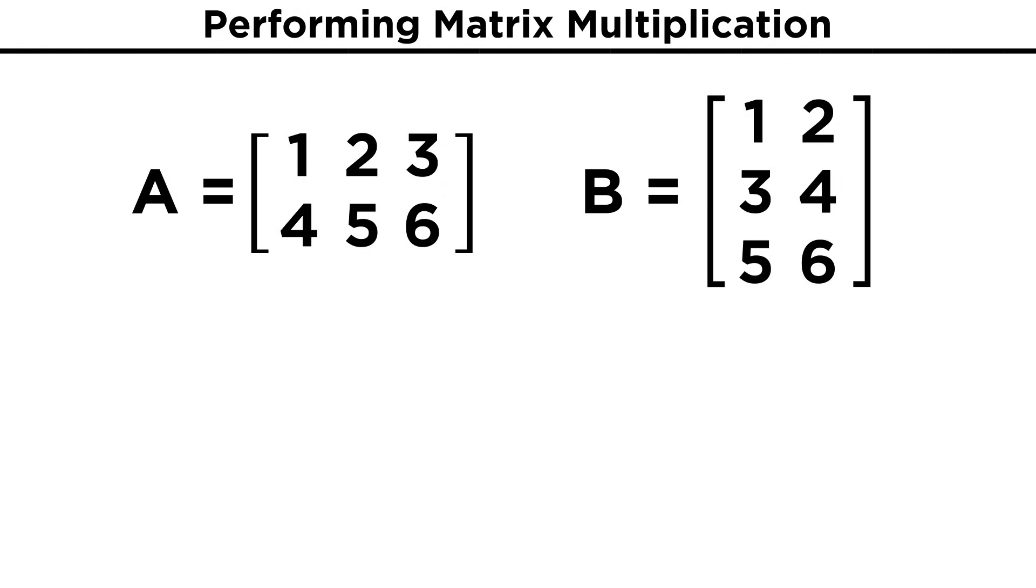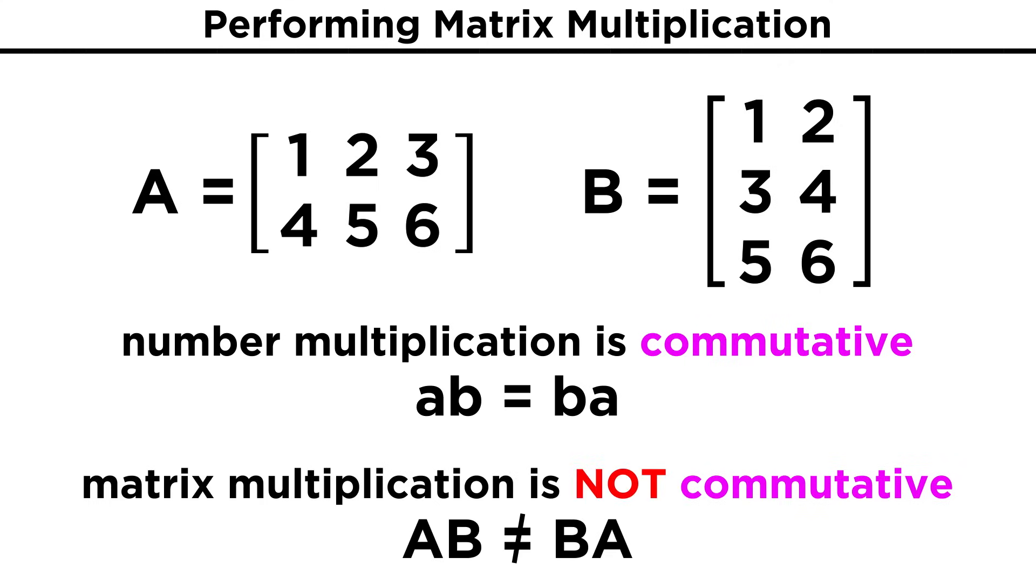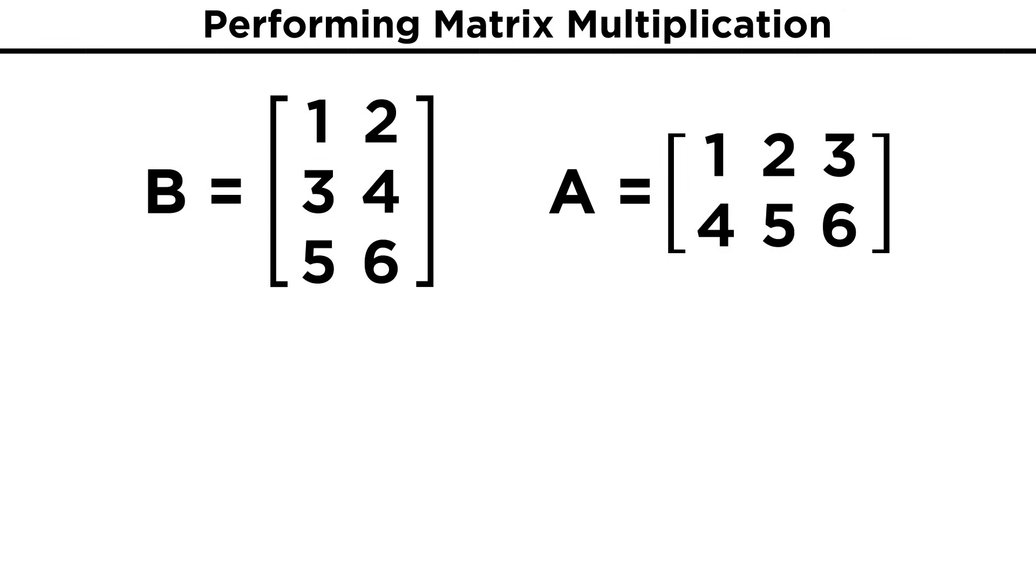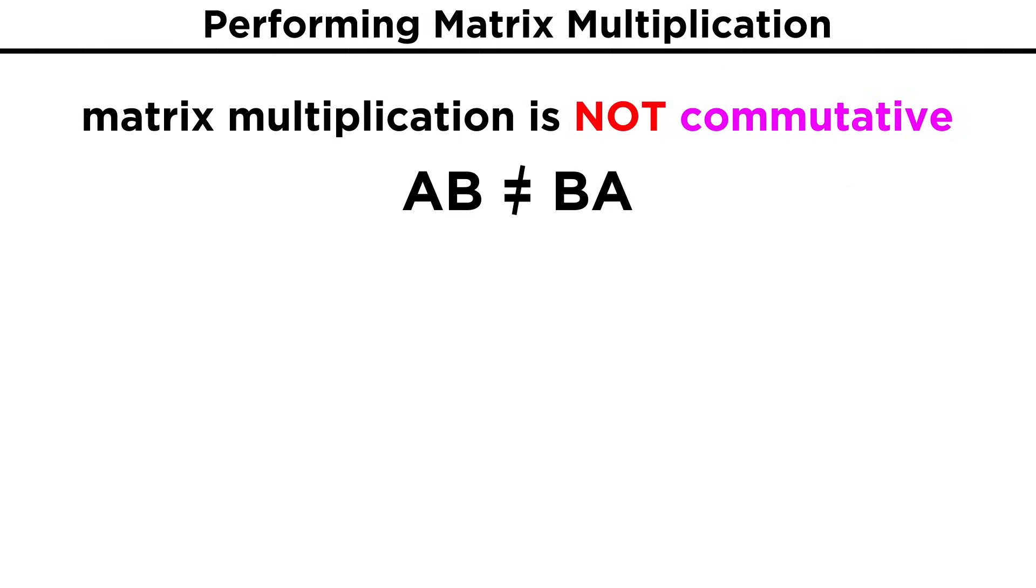This also tells us an important fact that may not have been immediately intuitive. Although the multiplication of numbers is commutative, meaning that A times B is the same as B times A, this will not be the case for matrix multiplication. Take the two by three and three by two matrices we just multiplied together. If we switch their order, we will get a completely different result, a product matrix that is three by three rather than two by two. As you can see, the three rows from the first one and the three columns from the second one will determine these dimensions. So matrix A times matrix B is not equivalent to matrix B times matrix A.